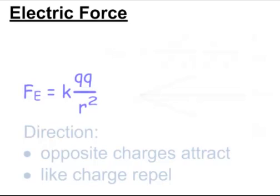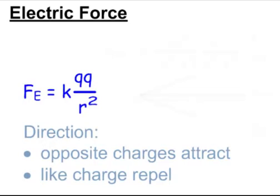One thing you've got to notice in all of these problems — if you're dealing with points in space, you're going to be dealing with these KQQ equations. For electric force specifically, to find the magnitude in newtons, the electric force is equal to KQQ over R squared. That K is, of course, that 9 times 10 to the 9th number.